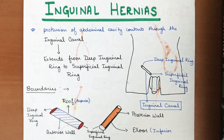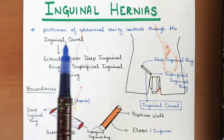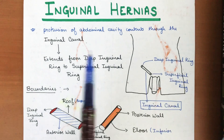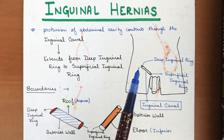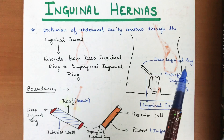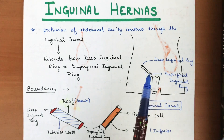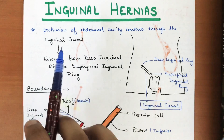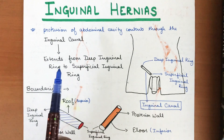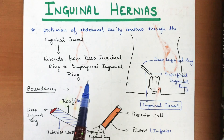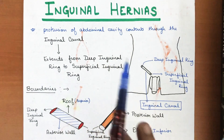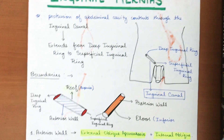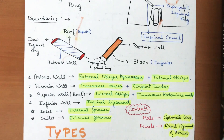In this video I'm going to tell you about inguinal hernias. Basically, in these hernias there will be protrusion of the abdominal cavity contents through the inguinal canal. The inguinal canal has two openings: the deep inguinal ring and the superficial inguinal ring. Whenever any abdominal content protrudes through this inguinal canal — from the deep inguinal ring to the superficial inguinal ring or beyond — that is known as an inguinal hernia.